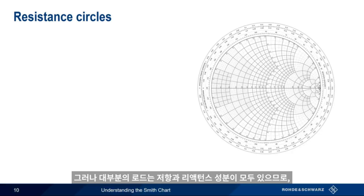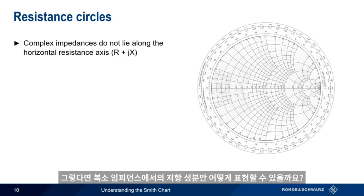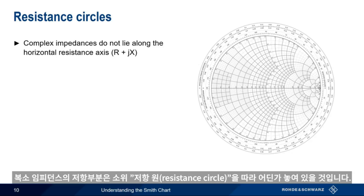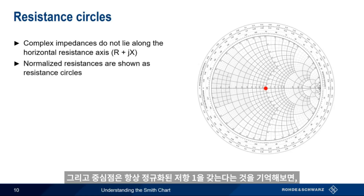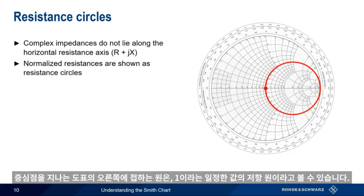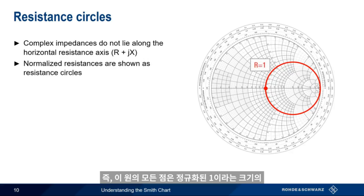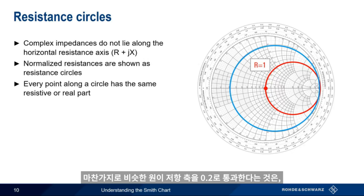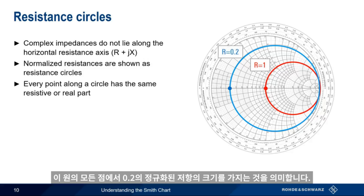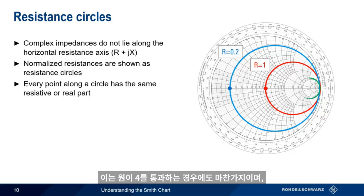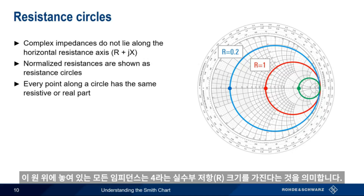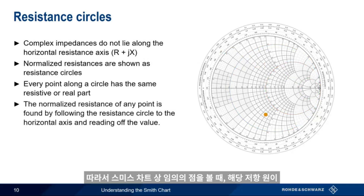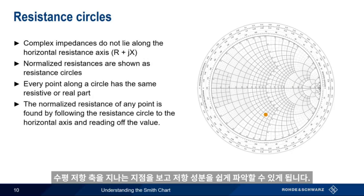Most loads, however, have both a resistive and a reactive part, so a complex Z sub L will not lie on the resistive axis. How then do we represent the resistive part of a complex impedance? The resistive part of a complex load will instead lie somewhere along a so-called resistance circle. Recall that our prime center has a normalized resistance of 1. A circle tangent to the right side of the chart, which passes through the prime center, represents a constant normalized resistance circle of 1. Every point along this circle has a normalized real or resistive part with magnitude 1. A similar circle which passes through the resistance axis at 0.2 represents a normalized resistance of 0.2 at every point on that circle. The same is true if the circle passes through the point 4 on the resistance axis — every impedance that lies on this circle will have a real part R equal to 4. For any point on the Smith Chart, we can determine its resistive part by simply following the corresponding resistance circle until it intercepts the horizontal resistance axis and reading off the value.